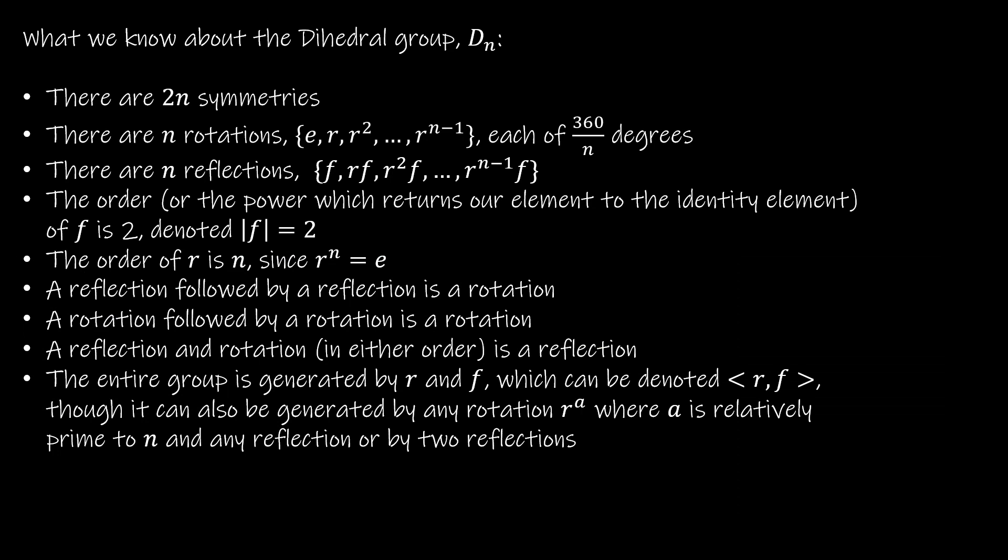So, in essence, here's what we know about the dihedral group, and something you'll want to keep in mind moving forward as we learn more and more different types of groups, special types of groups. So, there are two N symmetries. There are N rotations, and those rotations are going to be 360 divided by N. And we're just going to denote them E, R, R squared, and so on, all the way up to R to the N minus one. There are N reflections. And again, we're just going to be taking every element of the rotations multiplied by F.